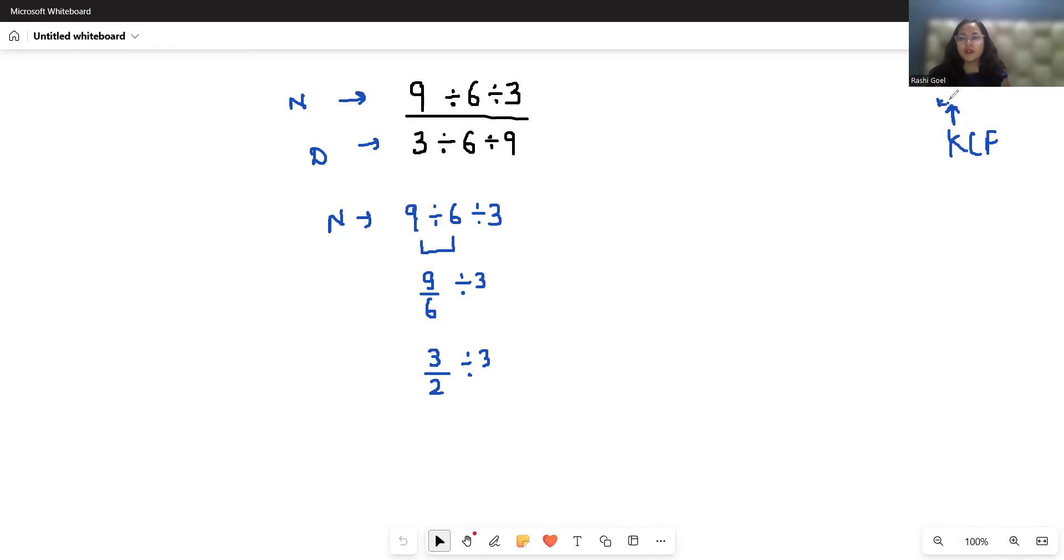C stands for change, change the symbol from division to multiplication. And F stands for flip, flip the right-hand side that is 1 by 3. So we will cancel out this, we get 1 by 2.